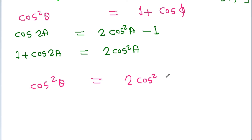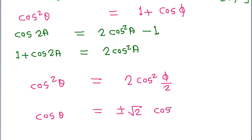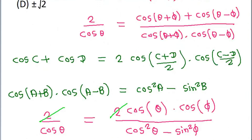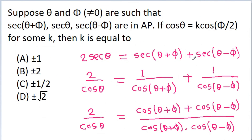Therefore cos²theta equals 2·cos²(phi/2), so cos theta equals ±√2·cos(phi/2). Since we have given cos theta equals k·cos(phi/2), the value of k is equal to ±√2.